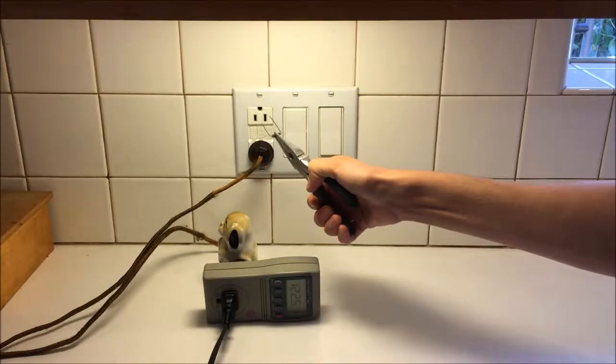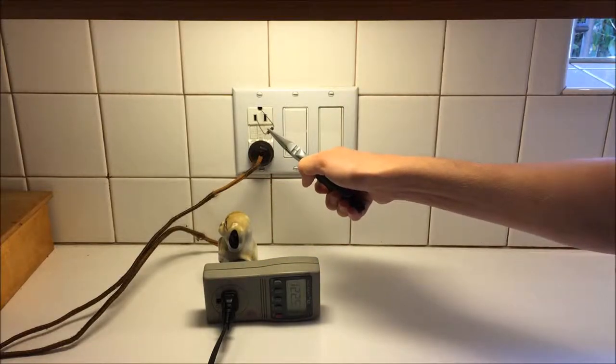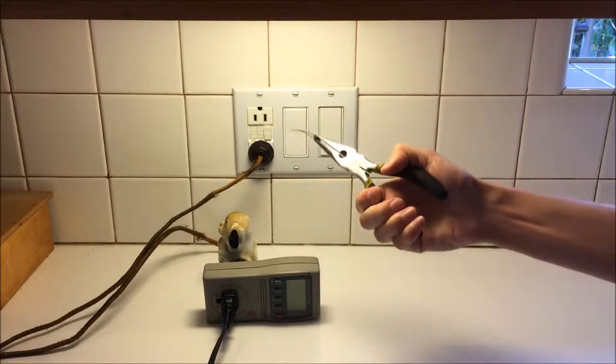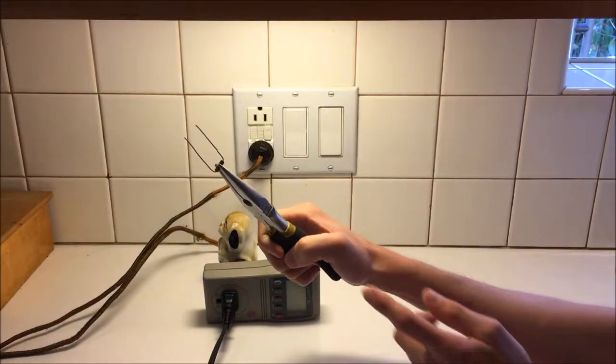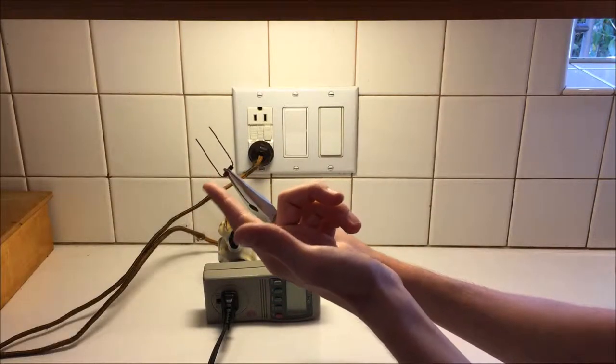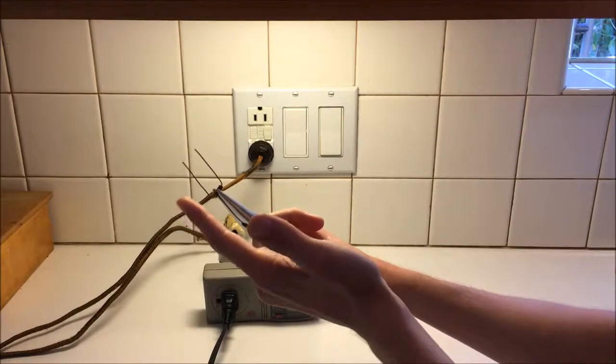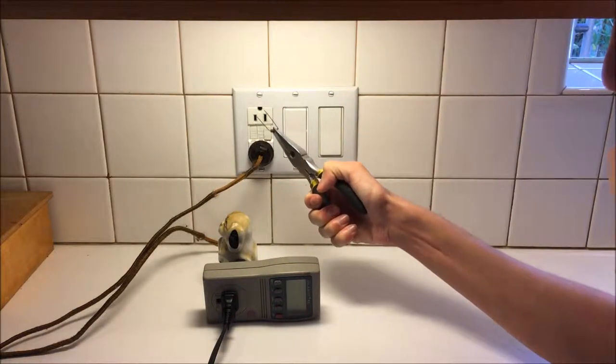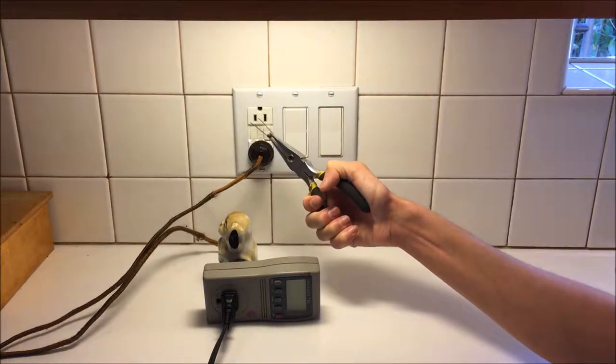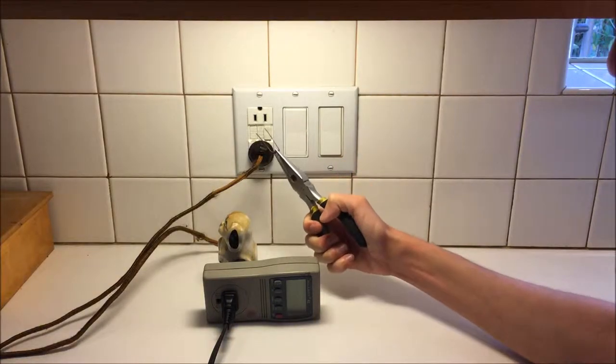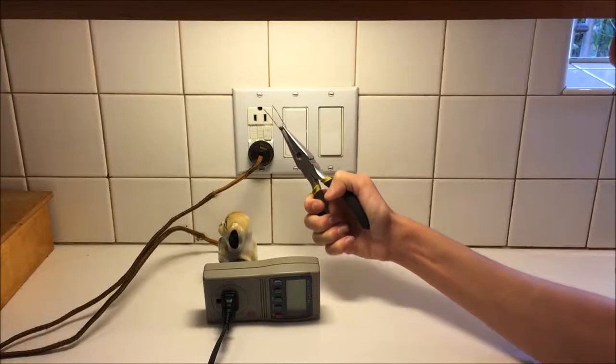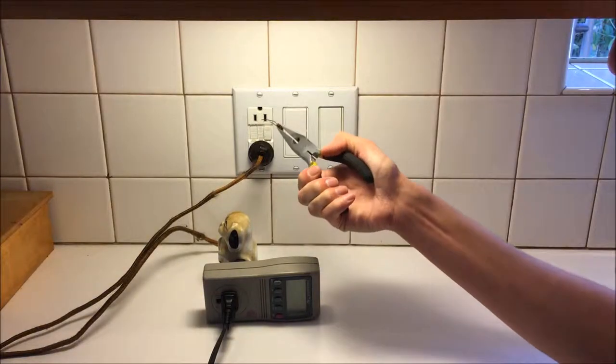However, if I connect this between the hot and the ground, oh it tripped the GFCI as expected. What essentially was happening is a small amount of current, 10 milliamps to be precise, was flowing through this resistor into the earth pin from the hot.